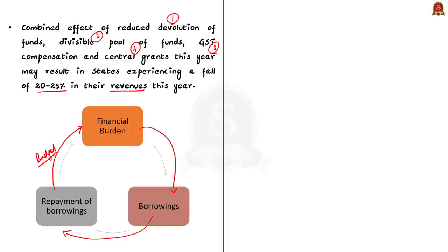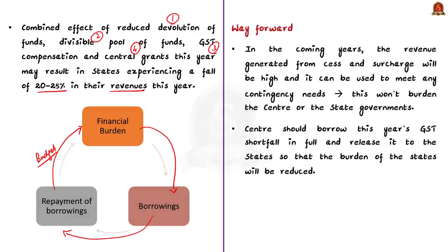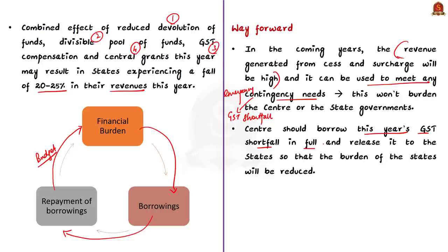The way forward suggested by the author: the revenue generated from cess and surcharge can be used to meet contingency or emergency needs like the shortfall in GST. This won't burden the central or state governments since the entire loan taken to compensate the GST shortfall can be repaid out of assured cess revenue continuing even after 2022. As the states demand, the central government should borrow this year's GST shortfall in full and release it to the states. The author's message is that stronger states lead to a stronger India, and the central government should help increase state revenues instead of working otherwise.